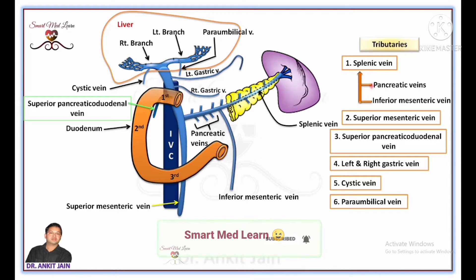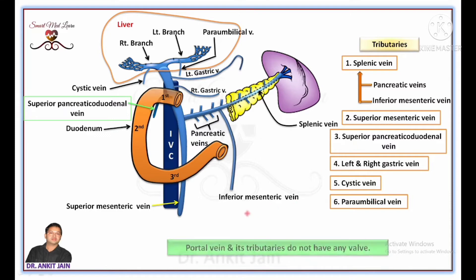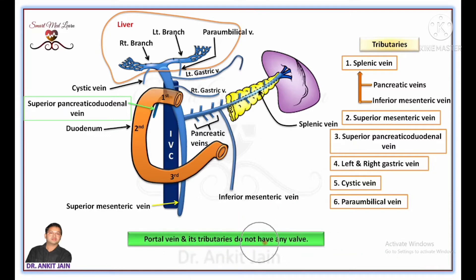So, splenic vein, superior mesenteric vein, superior pancreaticoduodenal vein, right and left gastric veins, cystic vein, and paraumbilical veins — all are the tributaries of the portal vein. Remember, portal vein and its tributaries do not have any valves.